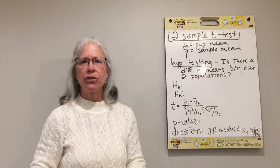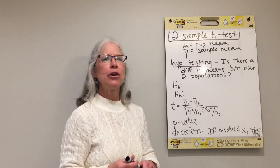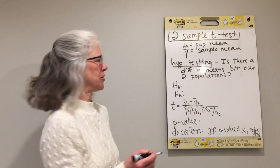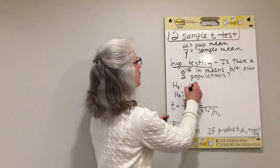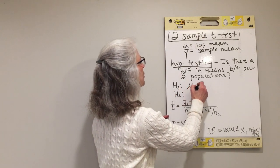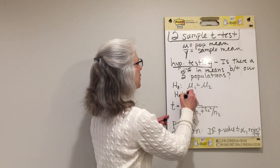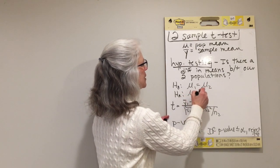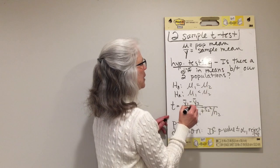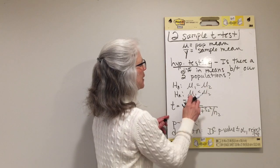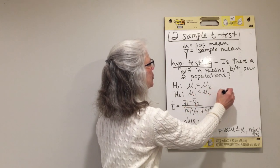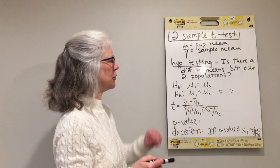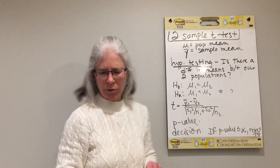The null hypothesis is always that there's nothing going on — there is no difference, there is no change. So our null hypothesis is that the mean of the first population is equal to the mean of the second. And then the alternate, depending on what we're interested in, could be that the mean of the first is less than the second, or not equal to, or greater than — something other than equal to.